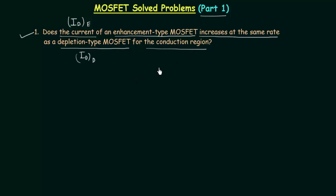The conduction region is the saturation region. In the saturation region the device is on, and we already know the equation of drain current in both cases — enhancement type MOSFET and depletion type MOSFET — and we will use these equations to find the solution of this problem.